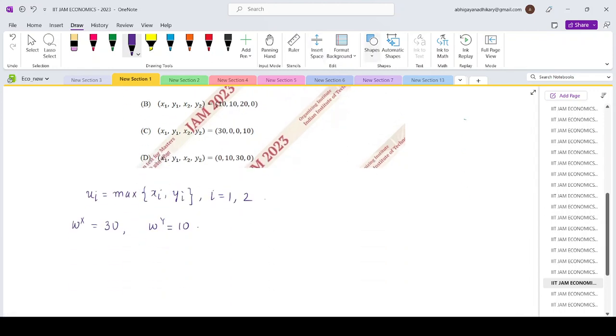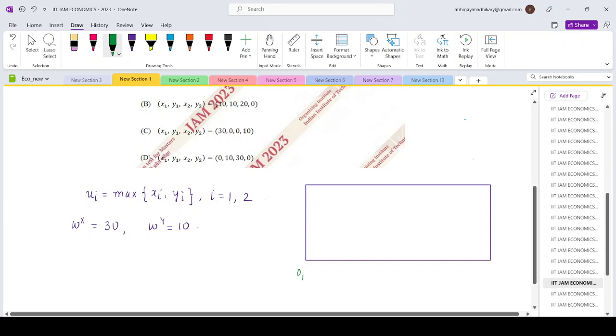So now if we construct the Edgeworth box, it will be a horizontal rectangle kind of a thing. So this will be the origin for agent 1, origin for agent 2. So along this direction we have X1, along this direction we have Y1, along this direction we have X2, along this direction we have Y2. So the total endowment of X is 30 and the total endowment of Y is 10.